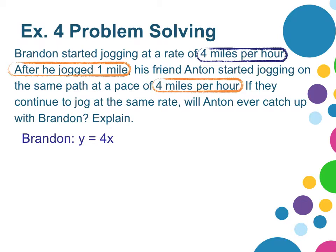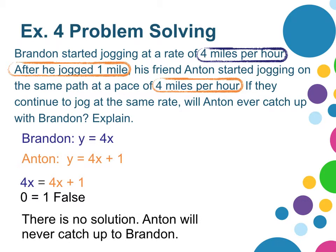Anton's equation could be y equals 4x plus 1. And to solve this system of equations, we could set 4x equal to 4x plus 1. We could subtract 4x from both sides. We get 0 equals 1. That is a false statement. Therefore, there is no solution. And we have just used algebra to prove why Anton will never catch up with Brandon.